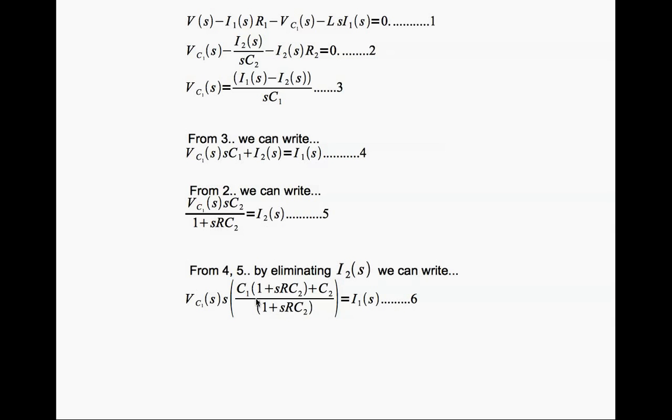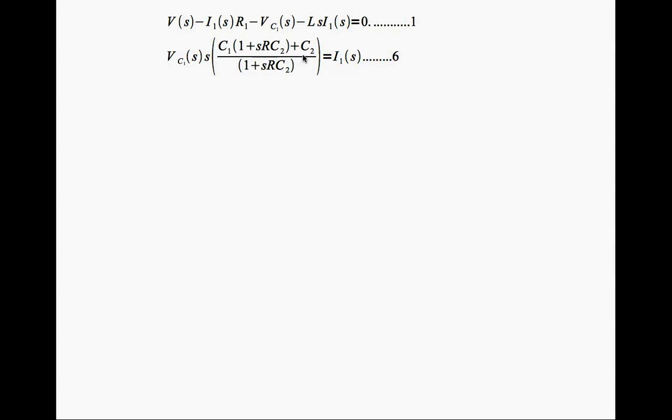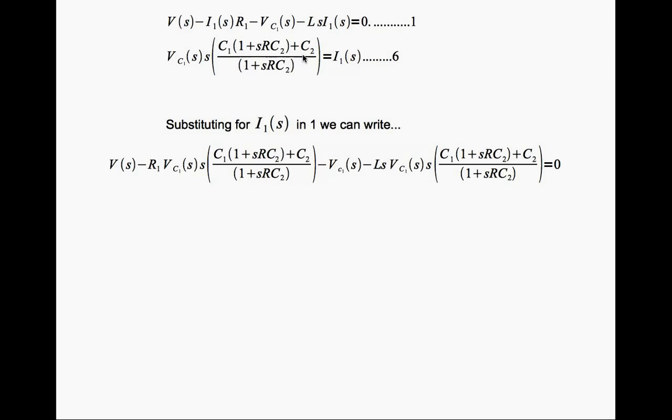Now let me look at equation number 6 and 1 on the next page. Now I'll eliminate I1 by substituting this value. That's what I get. Now I can write a relationship between VC1 and V, that's a transfer function. If you notice the highest power of S in this transfer function is cube, that is this term multiplied by this term. Therefore this is a third order equation. That's the end of this lecture.